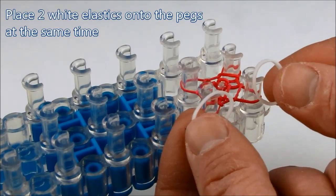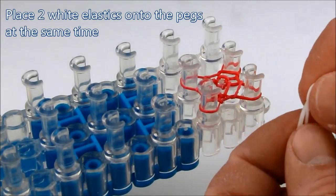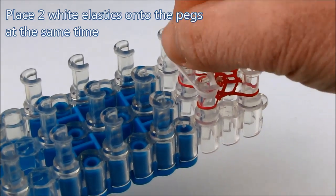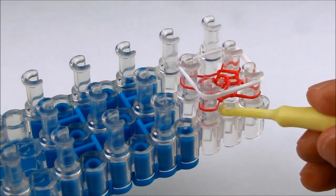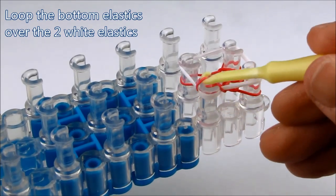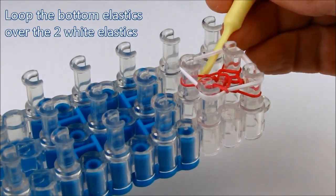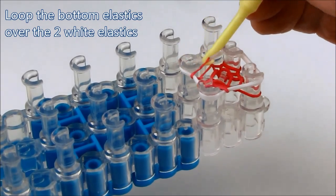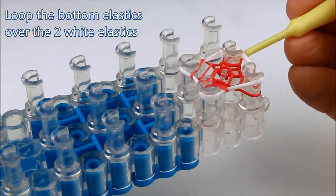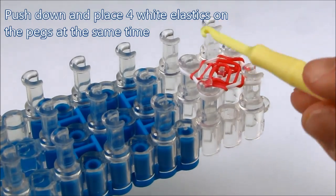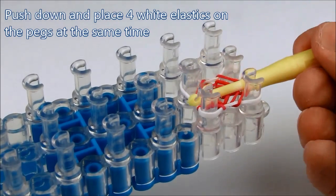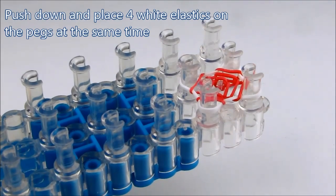Place two white elastics onto the pegs. And as before, loop the bottom red elastics over the white elastics. Make sure you loop over both sets of elastics that are on the pegs so far. Push it down.